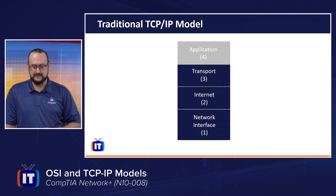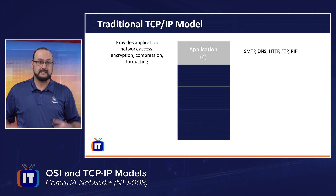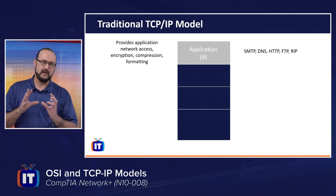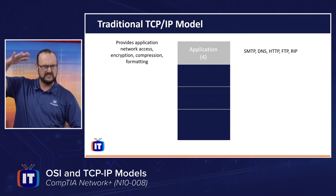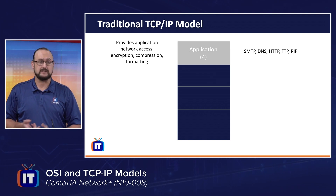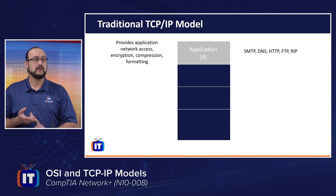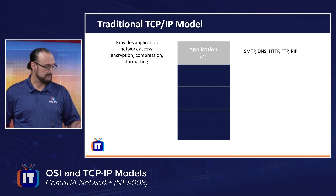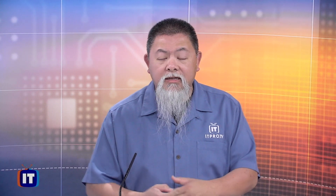Starting at the top — the application layer essentially provides our application network access, but it's doing a lot more than that. It's actually bundling a lot of the functionality we've seen in the OSI model and squeezing it all together in this first layer. This is where we get network access, formatting, and session establishment. The application layer is the key for preparing data for the network — the application handles all of that rather than breaking it down into separate layers.